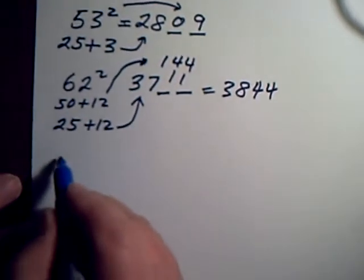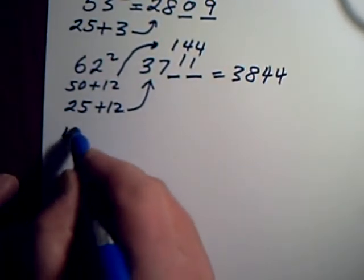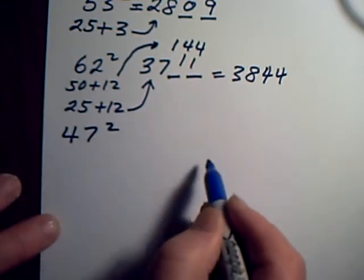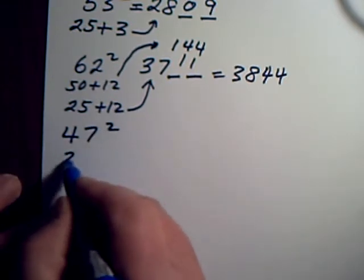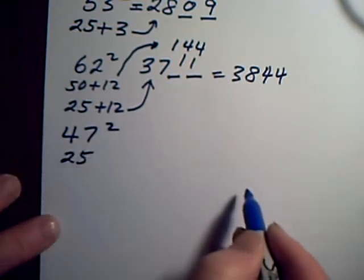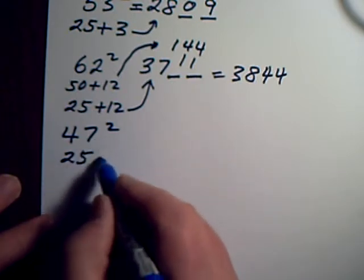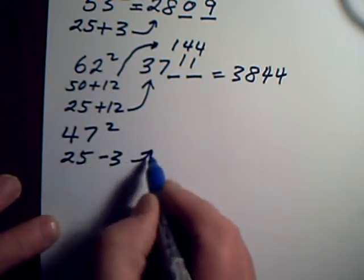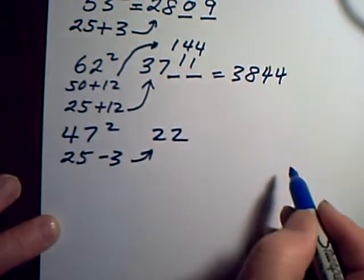If it's less than 50, so if I have something like 47 squared, I start again with 25—I'm always starting with 25—but since it's 3 less than 50 I subtract 3. That'll give me my answer of 22 with two spots.